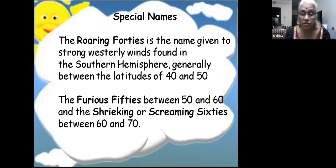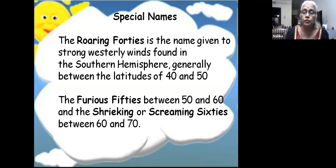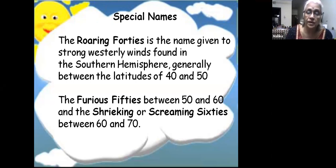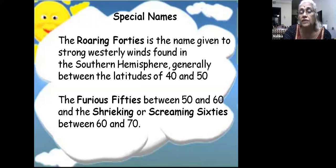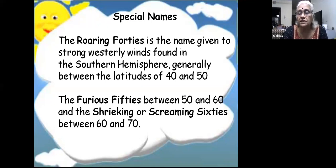These westerlies blow from west to east, making it impossible for ships to cross. The only way to reach Antarctica today is through the islands off South America, or by flying. Roaring Forties are 40-50 degrees south latitude, Furious Fifties are 50-60 degrees, and Screaming or Shrieking Sixties are 60-70 degrees - all only found in the southern hemisphere because there is no land in that zone, which is why the winds are so strong.